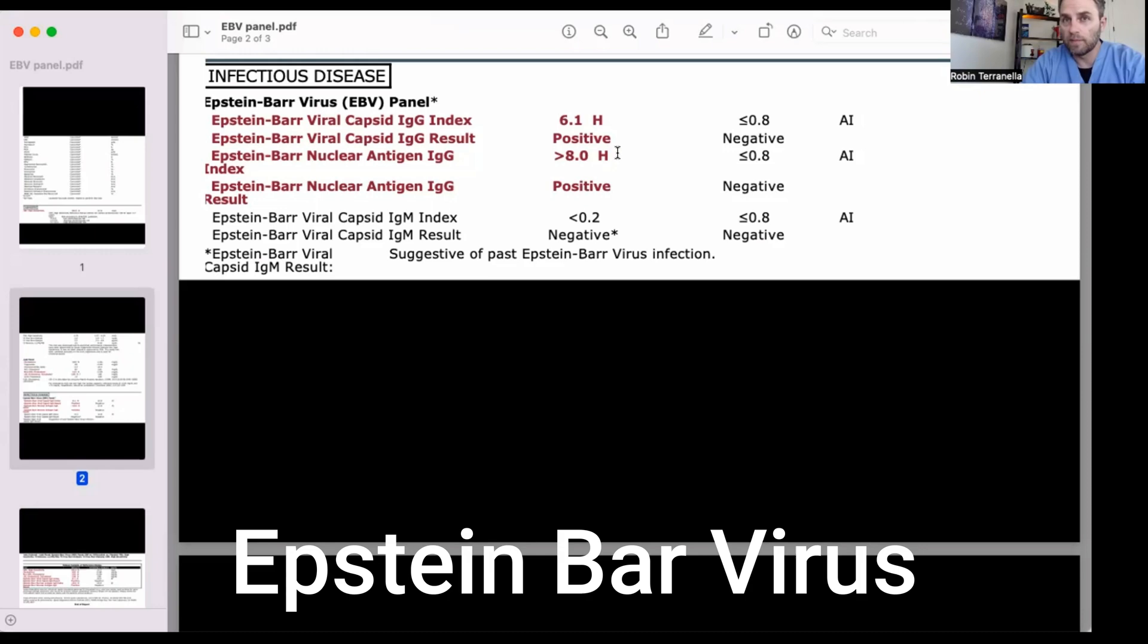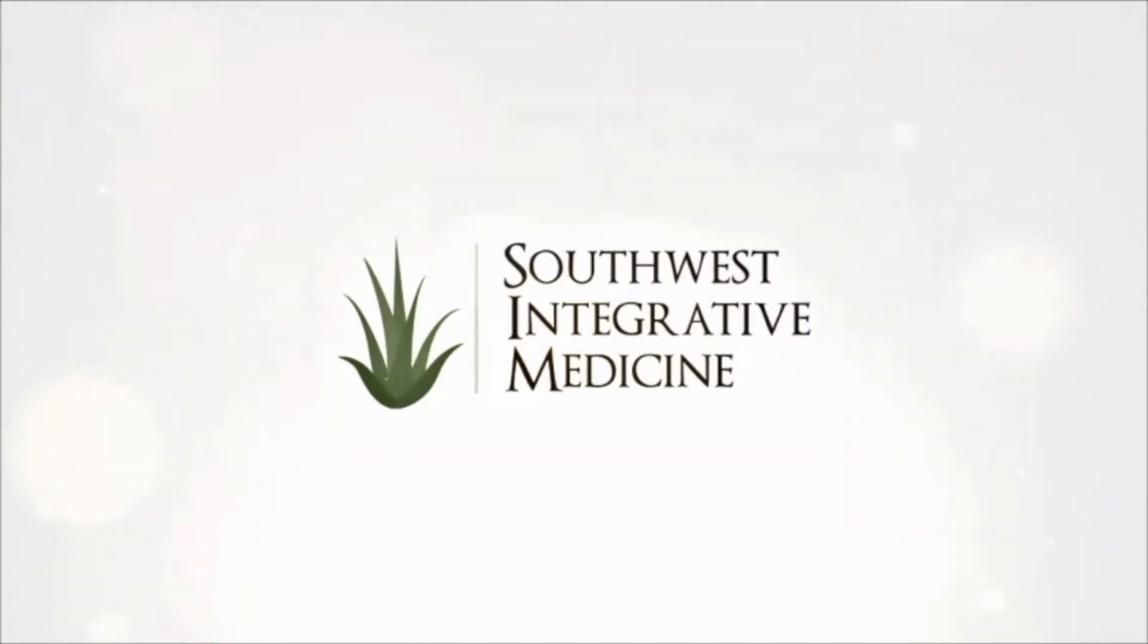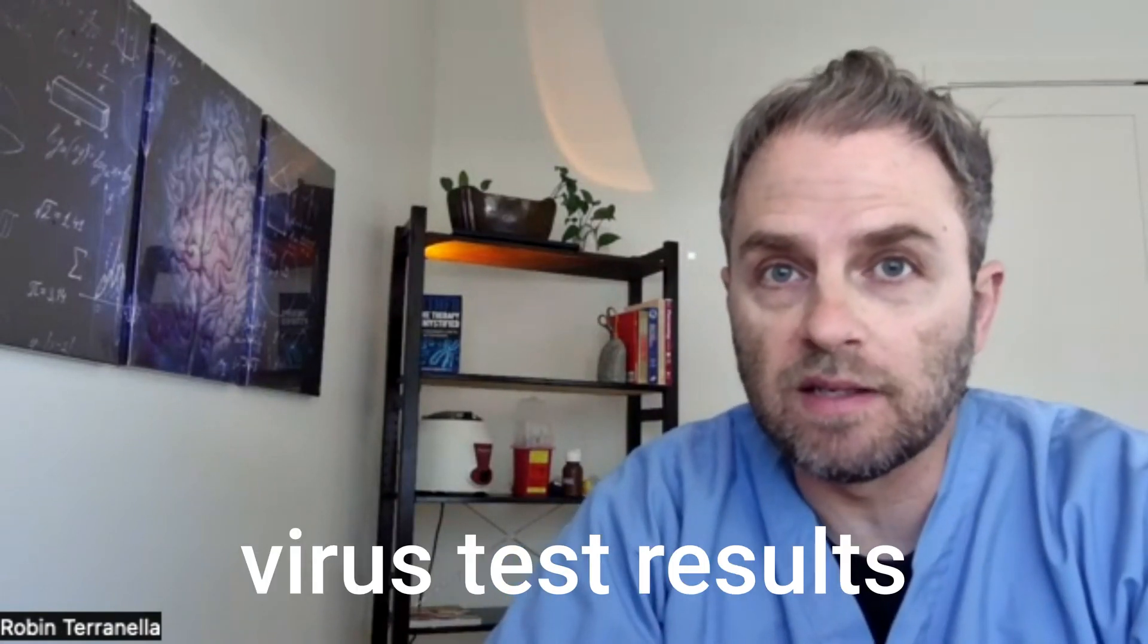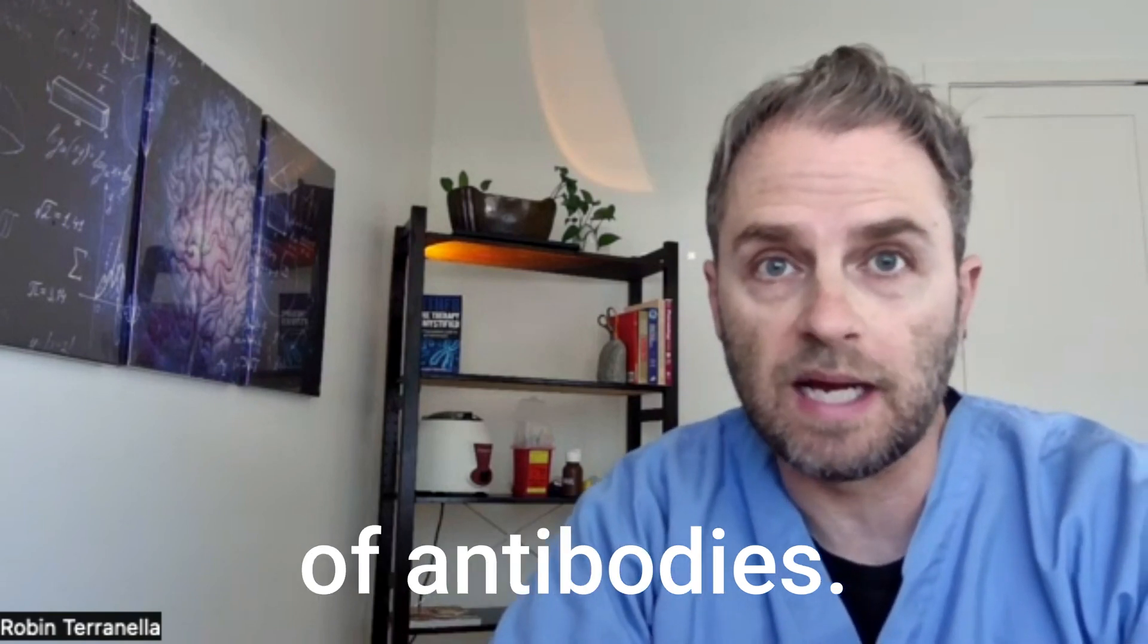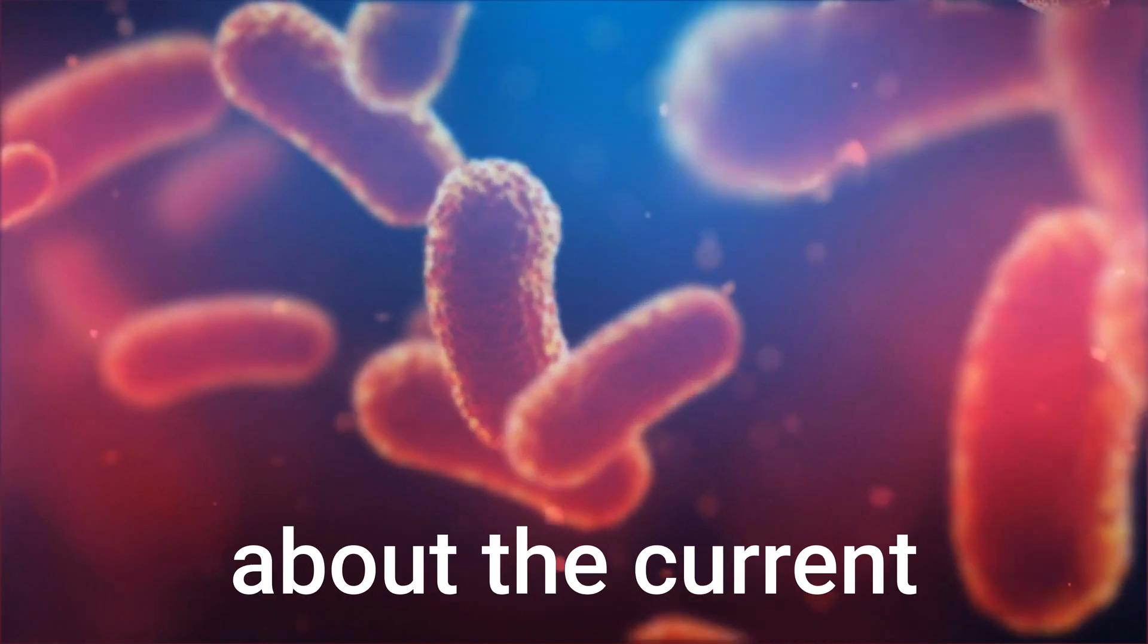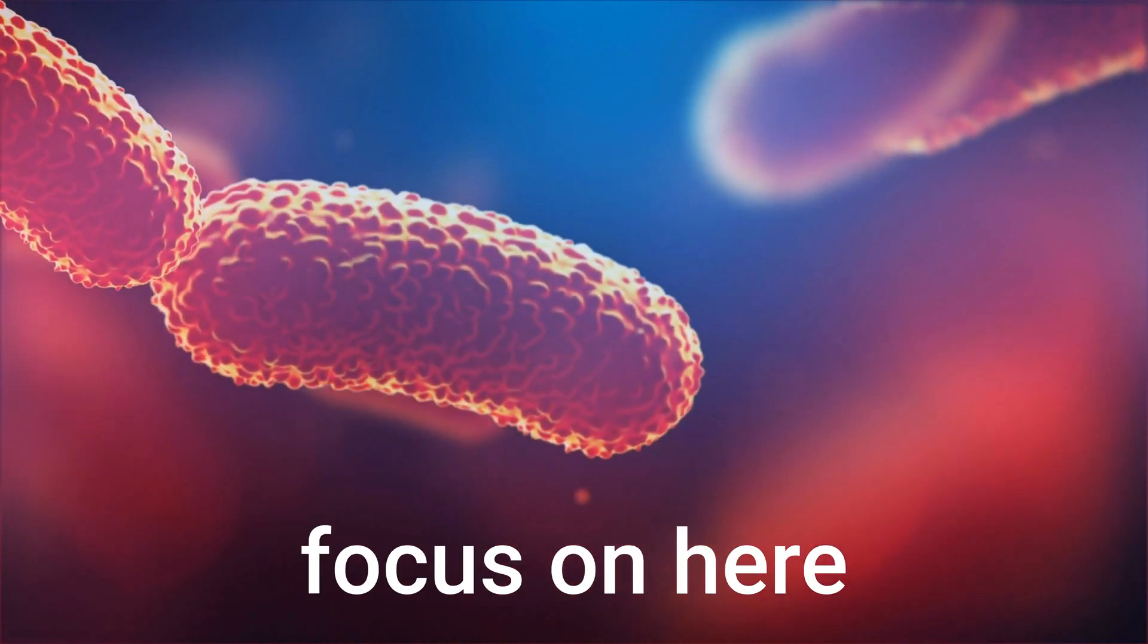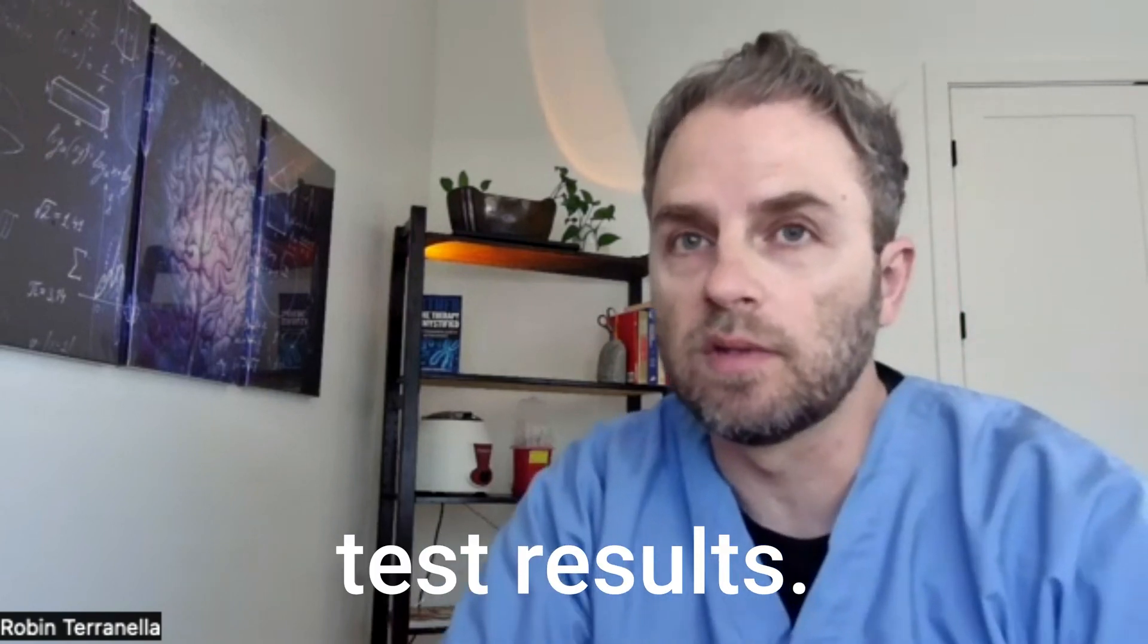So in this video, we're going to look at how to read Epstein-Barr virus test results. First thing is Epstein-Barr virus test results typically involve several different measurements of antibodies. And these measurements provide us information about the current activity of the virus in the body at the time of the blood draw. The antibody-based test is the most commonly used, so that's what we're going to focus on here.